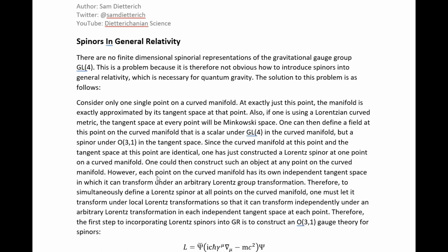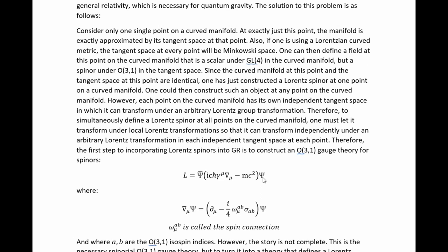One can then construct such an object at any point on the curved manifold. However, each point on the curved manifold has its own independent tangent space in which it can transform under an arbitrary Lorentz group transformation. Therefore, to simultaneously define a Lorentz spinor at all points on the curved manifold, one must let it transform under local Lorentz transformations, so that it can transform independently under an arbitrary Lorentz transformation in each independent tangent space at each point.